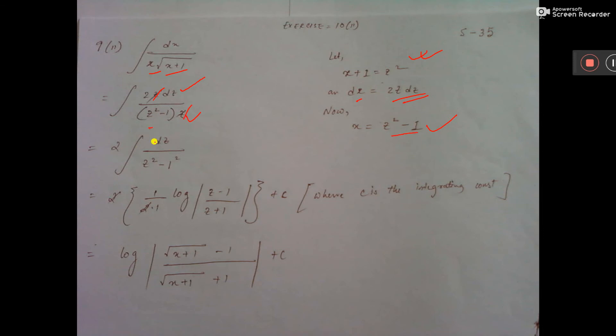Now dz by z square minus 1, what is the formula? Log mod z minus 1 by z plus 1 plus c. 1 by 2a, you must write, where a means 1, this 2 cancels.